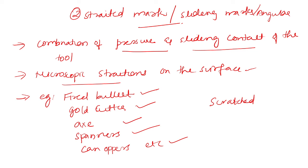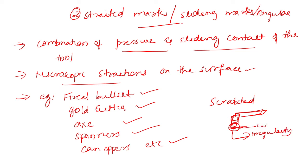For example, if we are using an axe for cutting wood — this is the cutting surface — if there is any irregularity in this cutting surface, that will transfer to the surface. For example, this is the wood in which the axe is affecting, so we cut the wood, and in this area we can see the irregularity of the particular cutting position. That is striated marks.